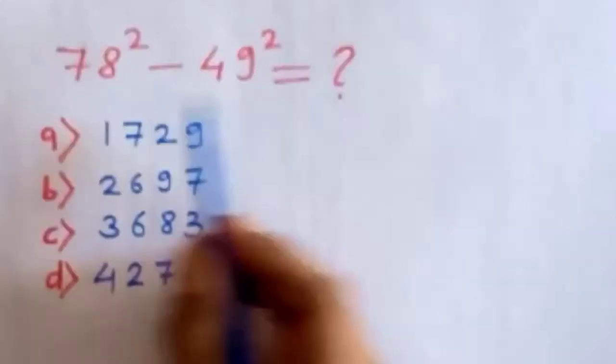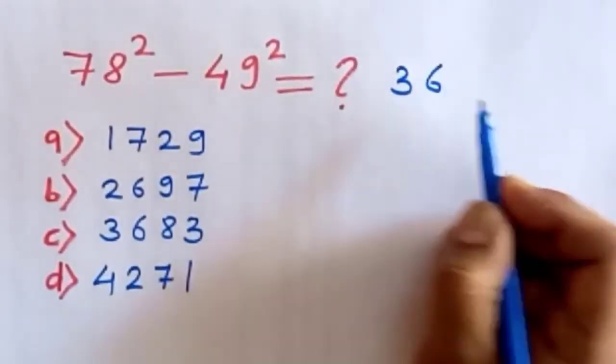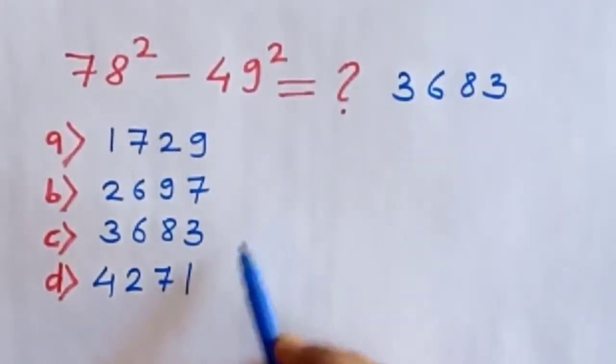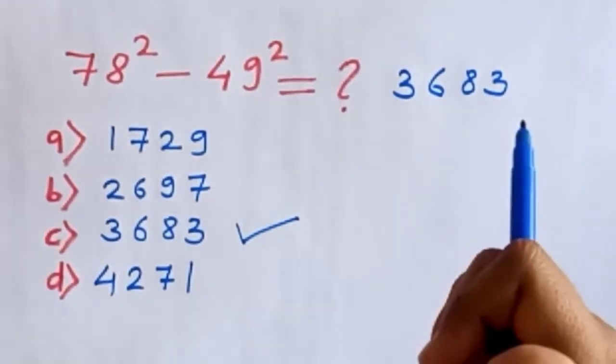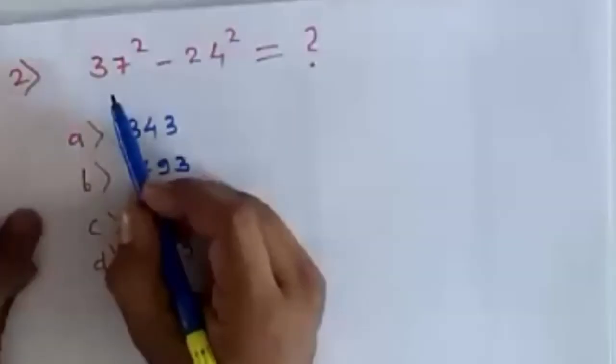So after the subtraction of these two squares, we get the answer 3683. Hence our option is C. In this way we solve this. By practicing more and more, you will be able to solve these questions in just 10 seconds.